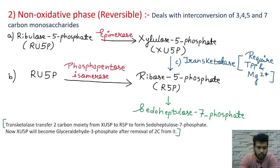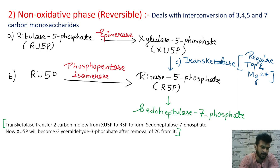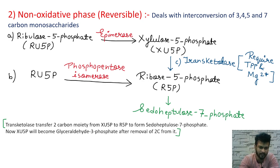The non-oxidative phase is reversible in nature. It deals with the interconversion of 3-, 4-, 5-, and 7-carbon monosaccharides. The first step is ribulose-5-phosphate (Ru5P) being converted into xylulose-5-phosphate by the enzyme epimerase, or alternatively into ribose-5-phosphate by the enzyme phosphopentose isomerase.